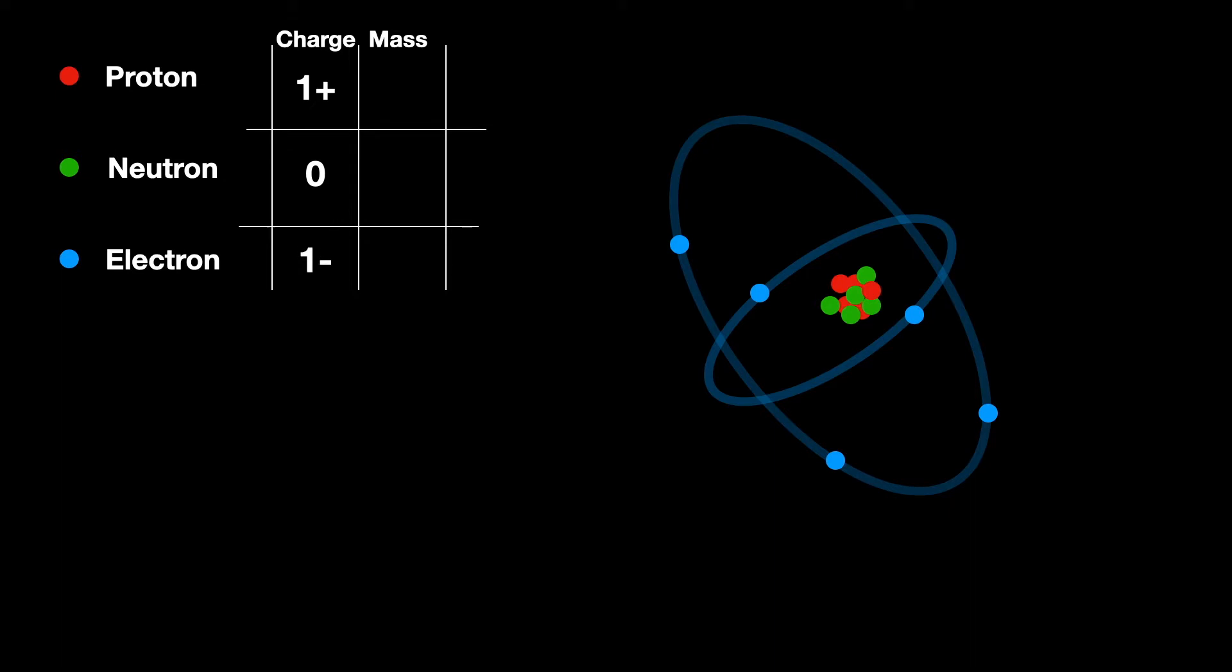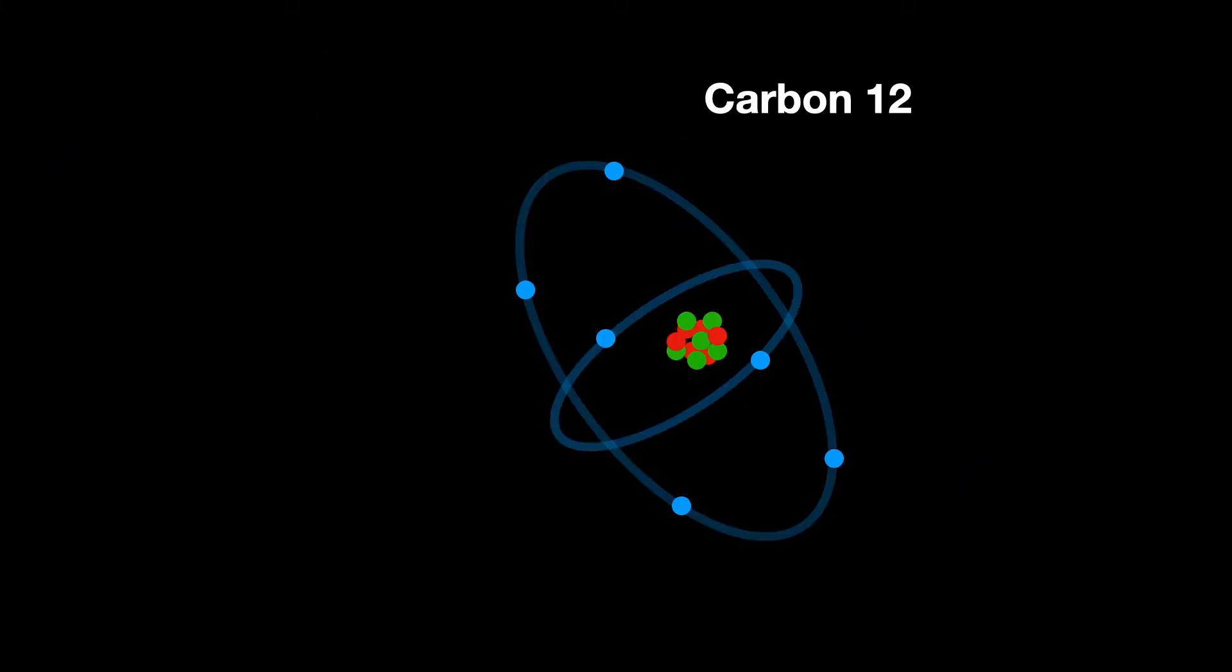A charge of one minus. Both protons and neutrons have a mass of one on an atomic scale. Electrons have an insignificant mass, usually counted as zero. Returning to our diagram of an atom, this one I've drawn here.